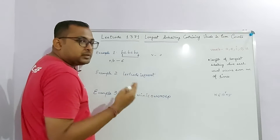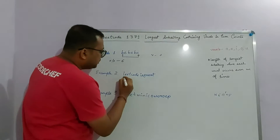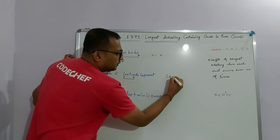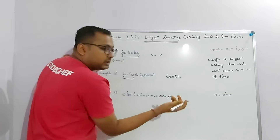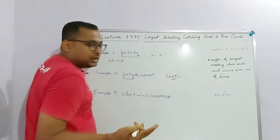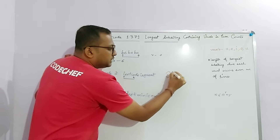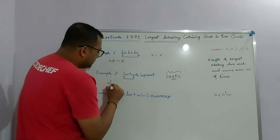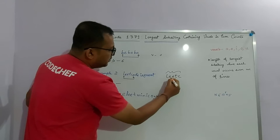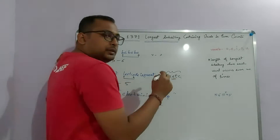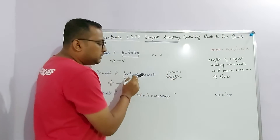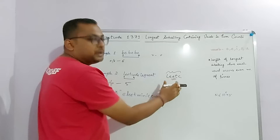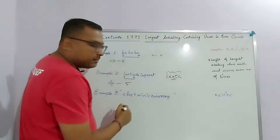Let's see another example. The string given is 'leetcode is great'. We need the longest substring where each vowel has occurred an even number of times. If you take the substring 'LETC', the only vowel is E which has occurred two times (even), and the rest are consonants. This is the largest possible substring, with length 5. Any larger substring won't have vowels occurring an even number of times.